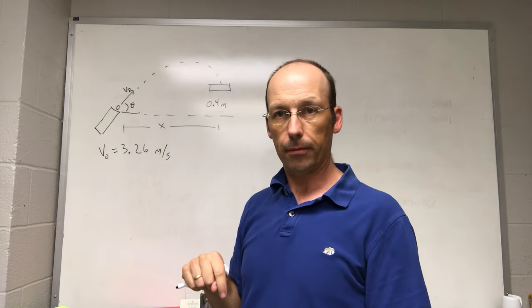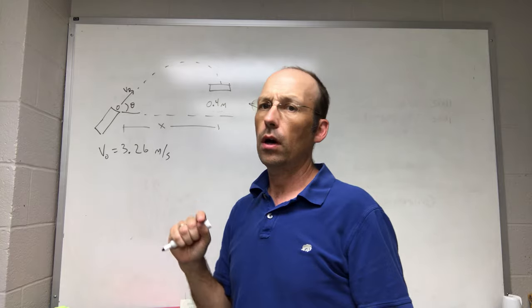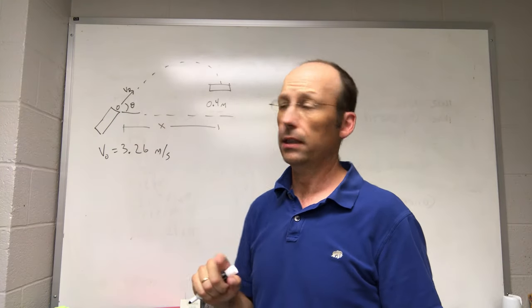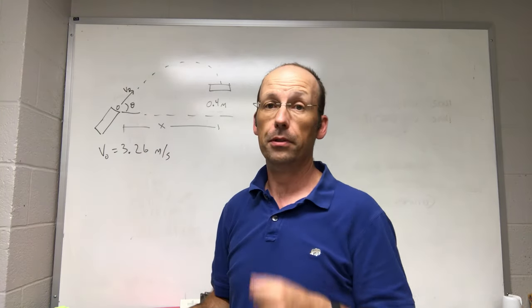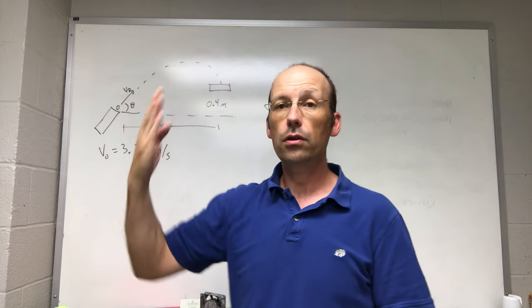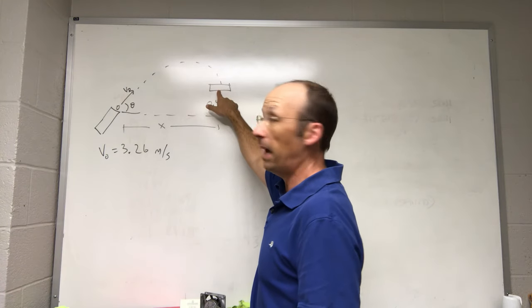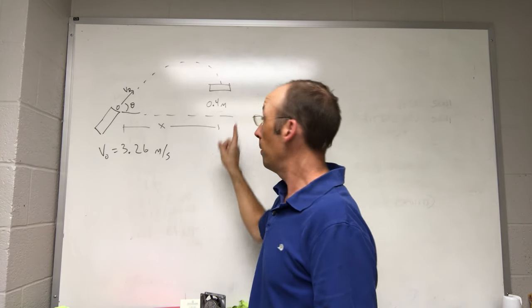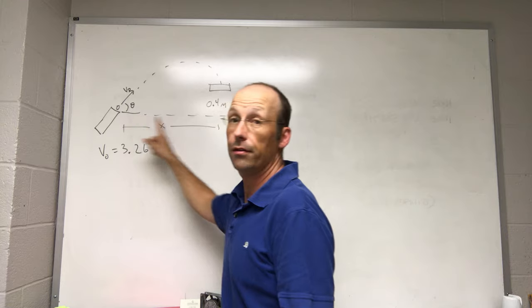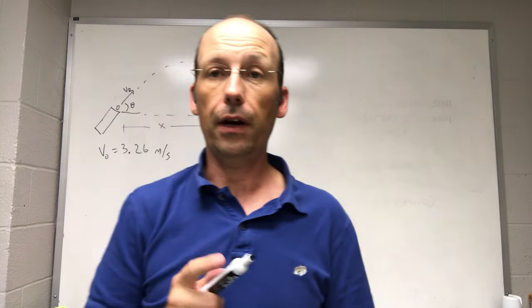Okay, now for the challenge problem. This is the fun part. So I measured my launch velocity and I got 3.26 meters per second. I want to shoot the ball at a 65 degree angle and I want to put a basket right there so that it lands. And the question is how far away does that basket need to be? And that's what we're going to do right now.